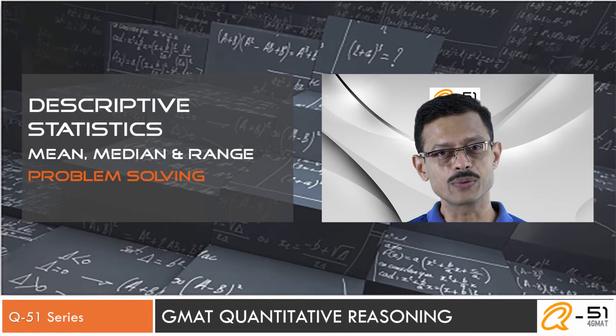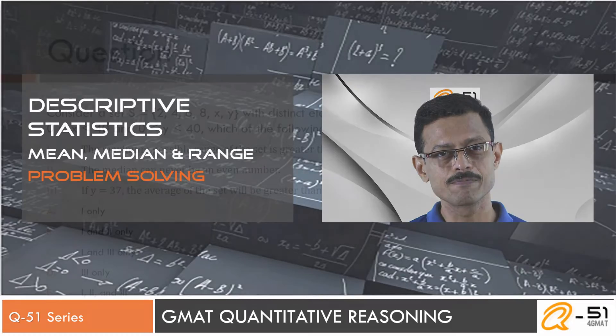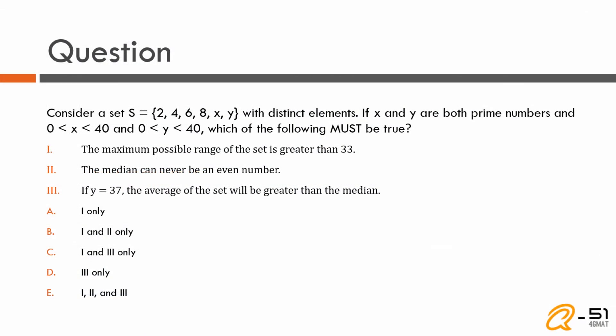Let's look at the question. Consider a set S with six elements: 2, 4, 6, 8, x, and y. Both x and y are prime, lie between 0 and 40 (neither inclusive), and all elements are distinct. We need to determine which of the three given statements is or are true.